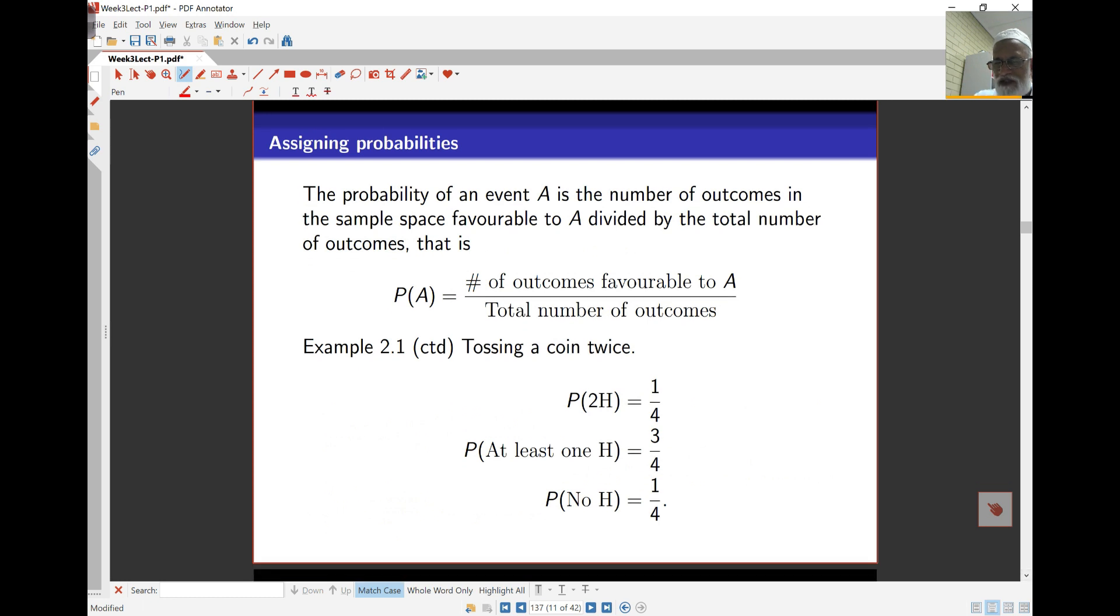Probabilities are assigned in many ways, but the simplest is to work out the number of favorable outcomes to event A over the total number of outcomes. The probability of event A is simply count the number of ways you can get outcomes favorable to A over the total number of outcomes. If I'm tossing a coin twice and want the probability of two heads, there are four outcomes total, and only one is two heads. If I say at least one head, there are three possibilities out of four. If I say no heads, that means two tails, which is one way out of four.